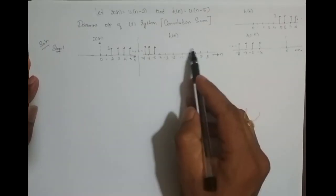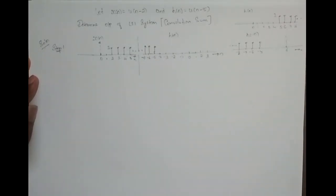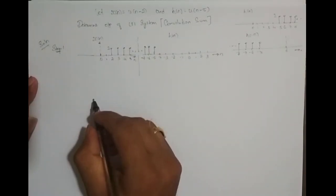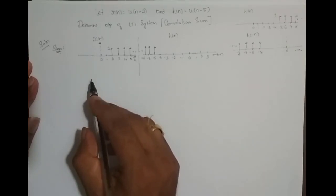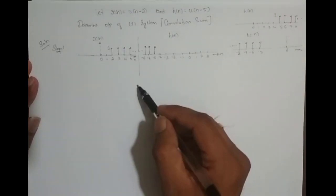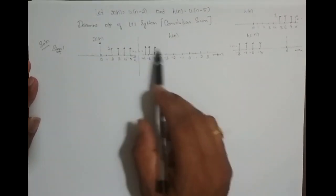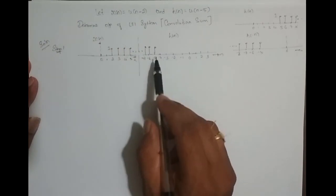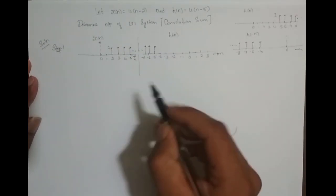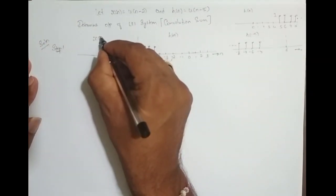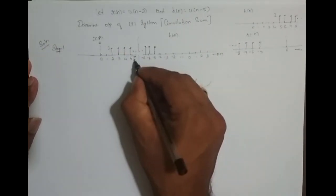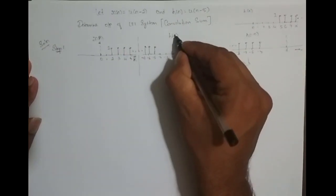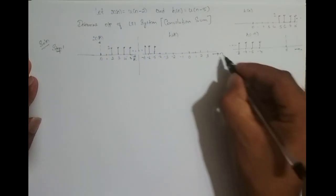So this is for the x of n sequence and this is for the h of minus n sequence. Once I have plotted x of n and h of minus n, I need to change the independent variable to k. So this becomes x of k and this is h of minus k.